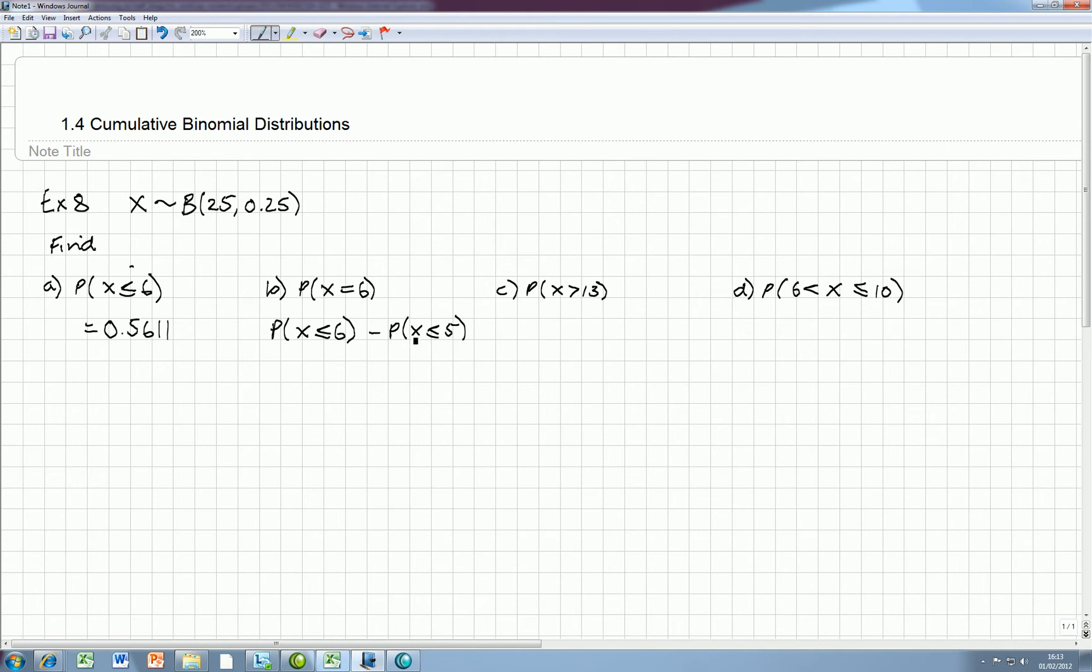Let me get these from the table. So that's 0.5611. We know that from over here. And this one, if you looked it up in the table, would be 0.3783. So pressing a few buttons on your calculator should give you 0.1828.